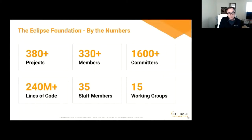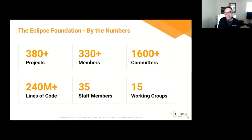Some numbers: we're known for the Eclipse IDE, but now we have close to 400 projects overseen at the Eclipse Foundation. We have 330-plus members who value our unique working group governance model and processes for enabling rapid innovation and growing industry adoption of emerging open source technologies. The foundation itself is quite lean — around 35 to 40 staff members — but we provide a great amount of value to our members.